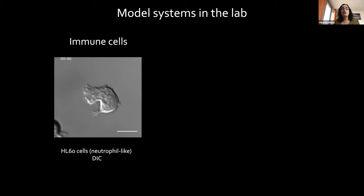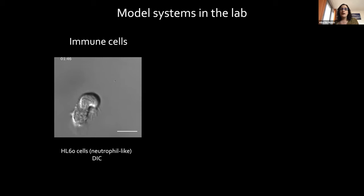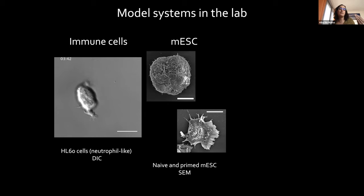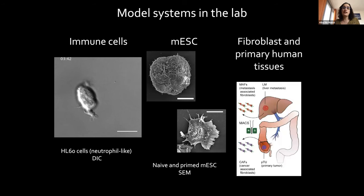What you see here is a neutrophil-like cell from a cell line called HL60. We also use primary T cells from blood donations and really study their motility. We also make extensive use of mouse embryonic stem cells. What you see here is the amazing transition between a naive mouse embryonic stem cell and a primed one — both still pluripotent, but with a radical change in shape and also in their capacity to contribute to chimeras. A part of the lab focuses on fibroblasts and primary human tissues, but I'm always happy to discuss those if relevant.